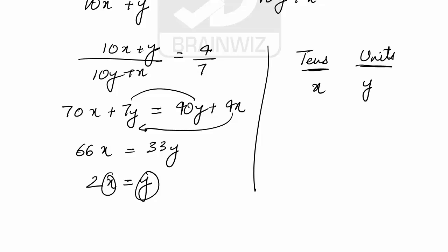If y is 1, x will be 2. If y is 2, x will be 4. If y is 3, x will be 6. If y is 4, x will be 8. If y is 5, x cannot be 10 because it's a digit. Digits always lie between 0 to 9, so this option is not valid.